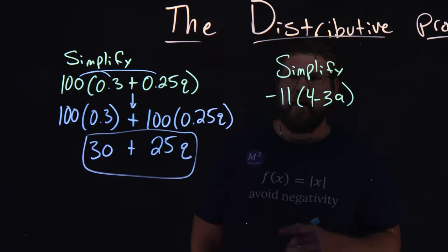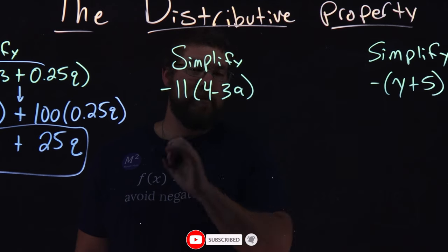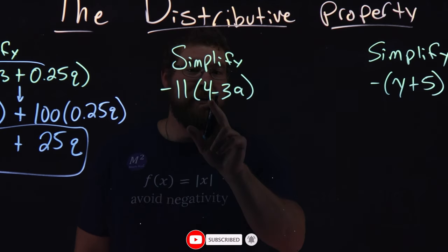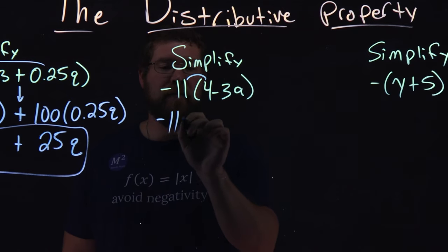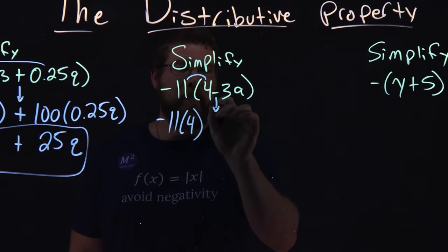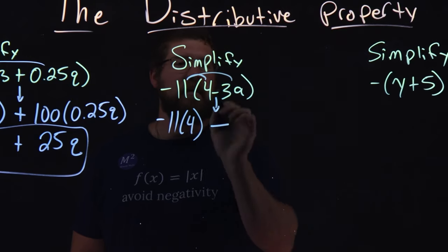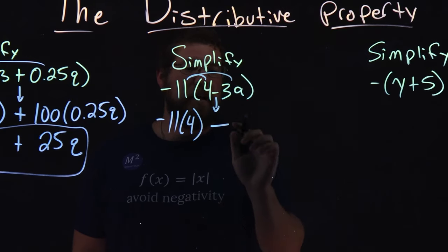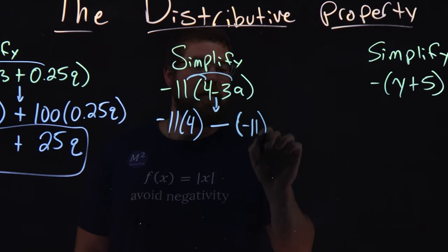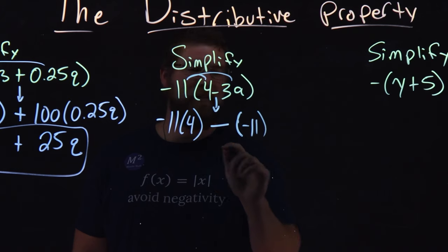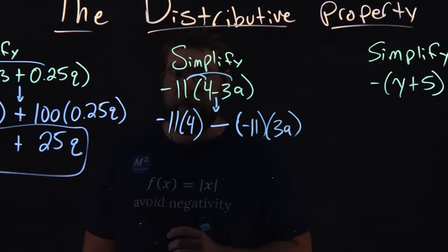Moving on to the next one. Same idea. We distribute the negative 11 to both terms inside the parentheses. Again, they're not like terms. Negative 11 times 4, so we have negative 11 times 4 here. Bring down the center operation, minus. And then, same thing again, negative 11 times 3a. I'm going to put parentheses around negative 11, so we keep the double negatives here. We'll see what happens in a second.